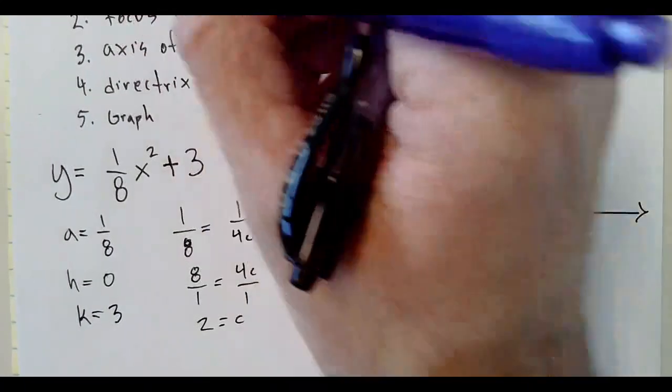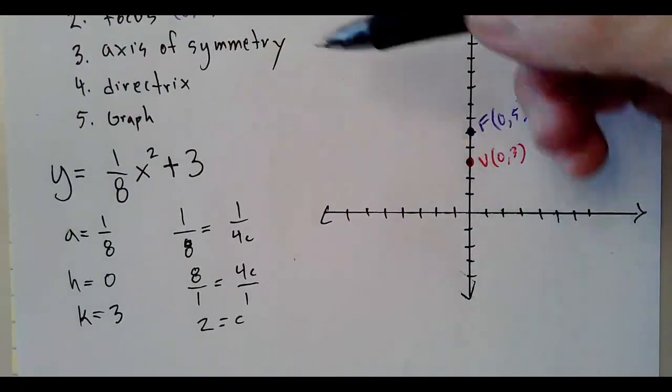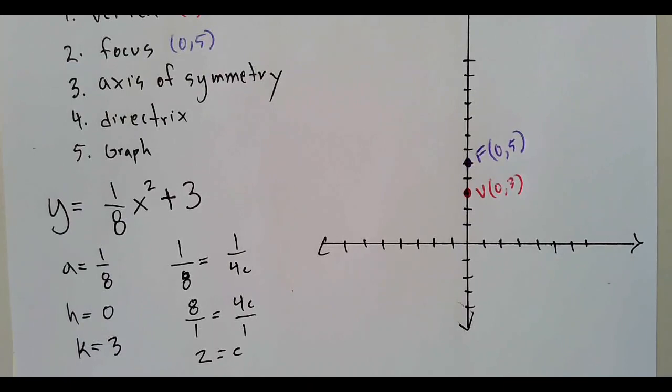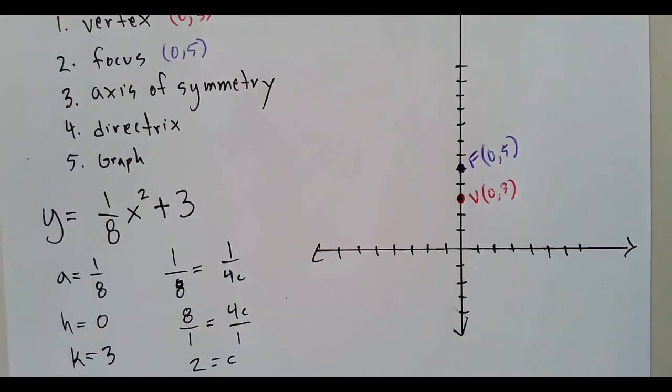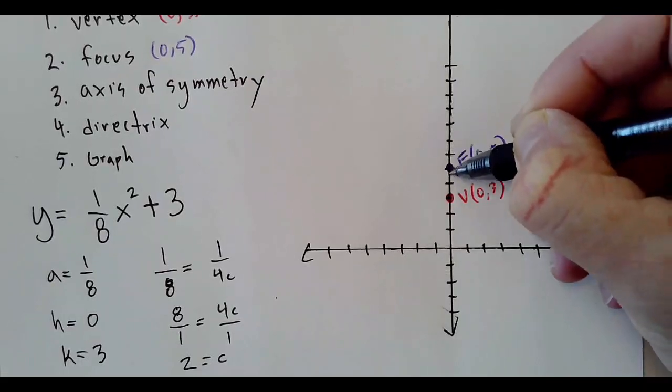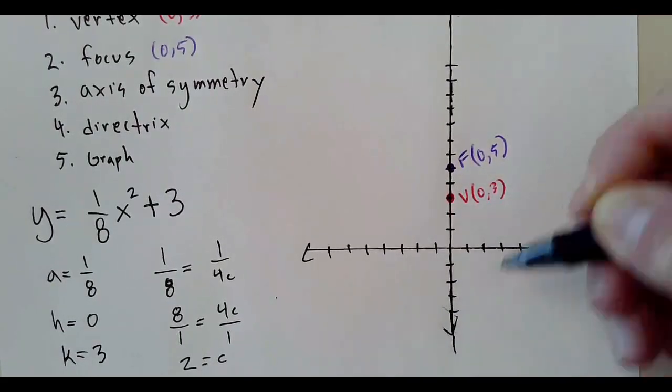Up here, (0, 5). The axis of symmetry goes right through it—does not shift left or right. So the axis of symmetry is going to be an x equals graph. It goes right through the y-axis, so x equals zero is our axis of symmetry.